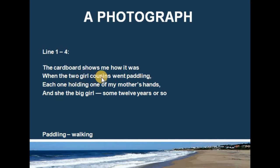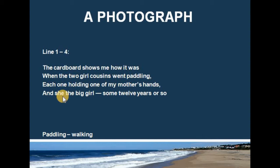These two girls were the cousins of the poet's mother. Each one was holding one of the mother's hands — one holding her right hand and the other holding her left hand. 'She, the big girl, some 12 years or so' means the poet's mother was around 12 years old, and she was the eldest among the two cousins in that photograph.